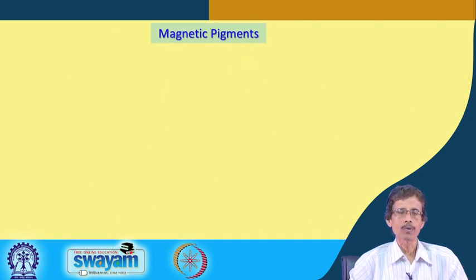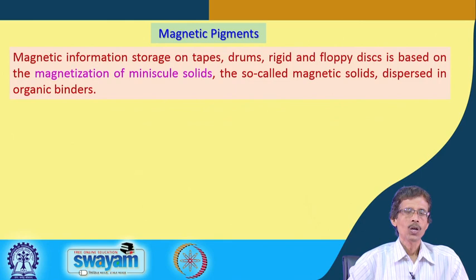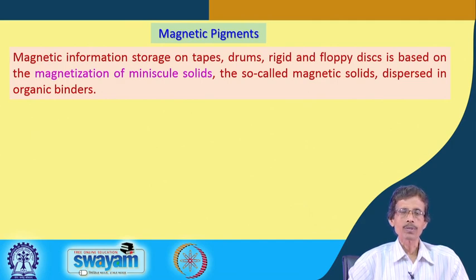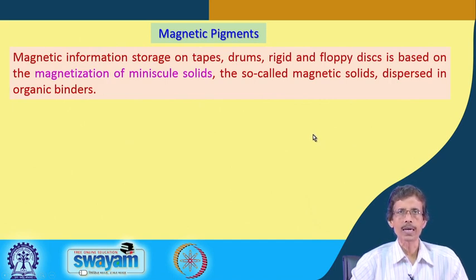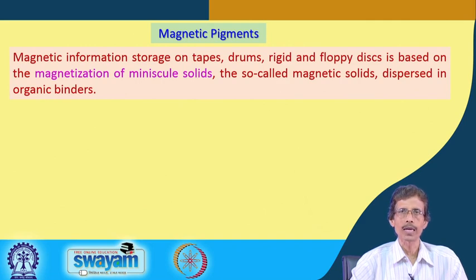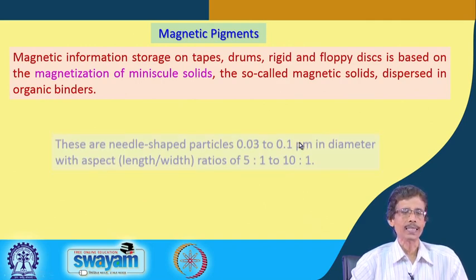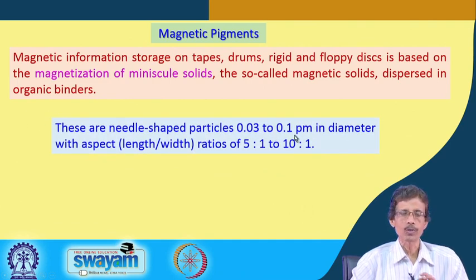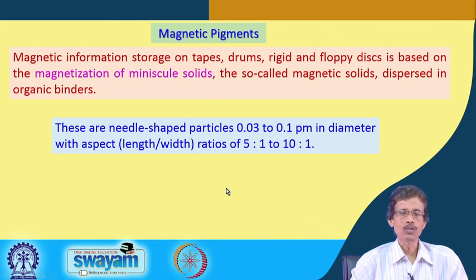Finally, magnetic pigments are very important. They are used for magnetic information storage in audio tapes, magnetic drums, rigid and floppy disks. Magnetization of miniscule magnetic solids dispersed within organic binders gives magnetic pigments. The needle-shaped particles are 0.03 to 0.1 micrometers in diameter with an aspect ratio (length to width) of 5:1 to 10:1.